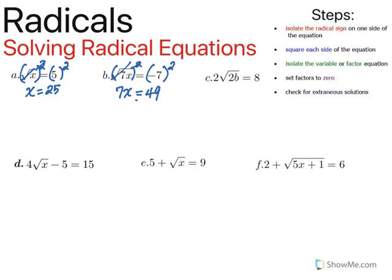Now we need to isolate the variable, so I need to get x by itself. To do that, I'm going to divide both sides by seven, which is the inverse of multiplication. So we get x equals seven.